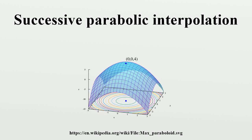Successive parabolic interpolation is a technique for finding the extremum of a continuous unimodal function by successively fitting parabolas to a function of one variable at three unique points, or, in general, a function of n variables at 1 plus n times two points, and at each iteration replacing the oldest point with the extremum of the fitted parabola.